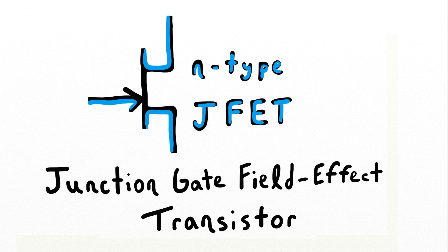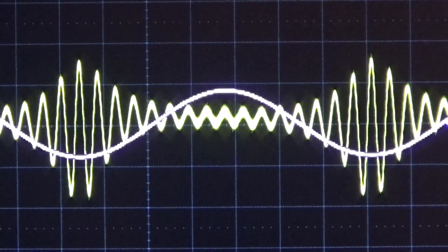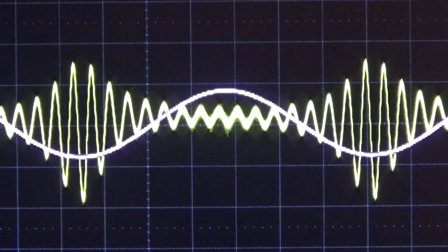If we apply a certain amount of voltage to the input terminal, the gate, we can get the drain and the source, the other two terminals, to behave like a resistor. In this video we're going to go over how we can get this JFET transistor to act like a variable resistor with a controlling input voltage.